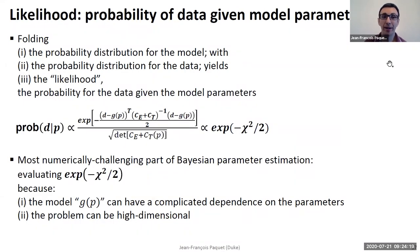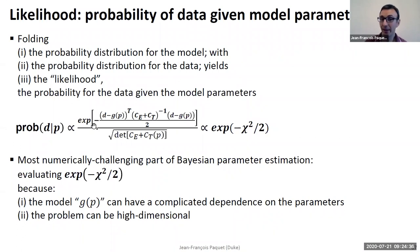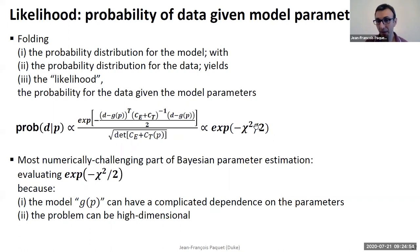By combining the probability distributions from the data and from your model, you obtain what is called the likelihood — the probability of obtaining a certain value for your observable d, given the parameters. Folding the distributions gives you a form involving data minus model prediction, with the experimental and theoretical covariance matrices adding up. You can recognize this as essentially your chi-squared, arising from the assumption that both the model and data probability distributions are Gaussian.